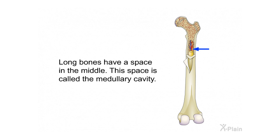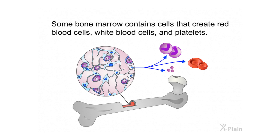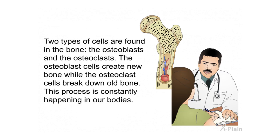Long bones have a space in the middle called the medullary cavity. Bones are also made up of bone marrow, which is soft, spongy tissue found in the center of most bones in the medullary cavity. Some bone marrow contains cells that create red blood cells, white blood cells, and platelets.